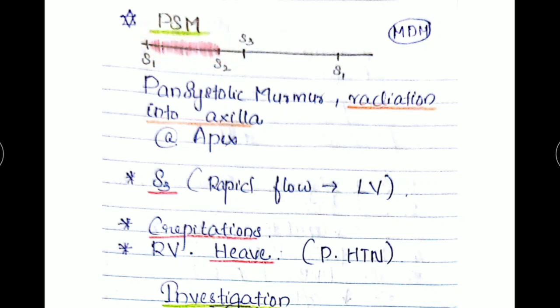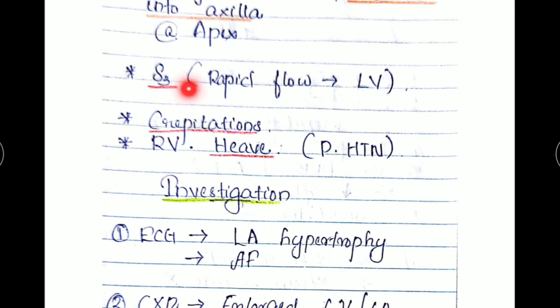This is the pansystolic murmur which extends throughout the systole. Also, there can be mid-diastolic murmur because of overloaded left atria pumping blood into the left ventricle. But the typical finding is pansystolic murmur which radiates into the axilla. As I had told, there will be S3 gallop rhythm because of rapid flow into the left ventricle. Features of pulmonary edema such as fine bilateral basal crepitations, parasternal heave because of pulmonary hypertension and right ventricular hypertrophy.